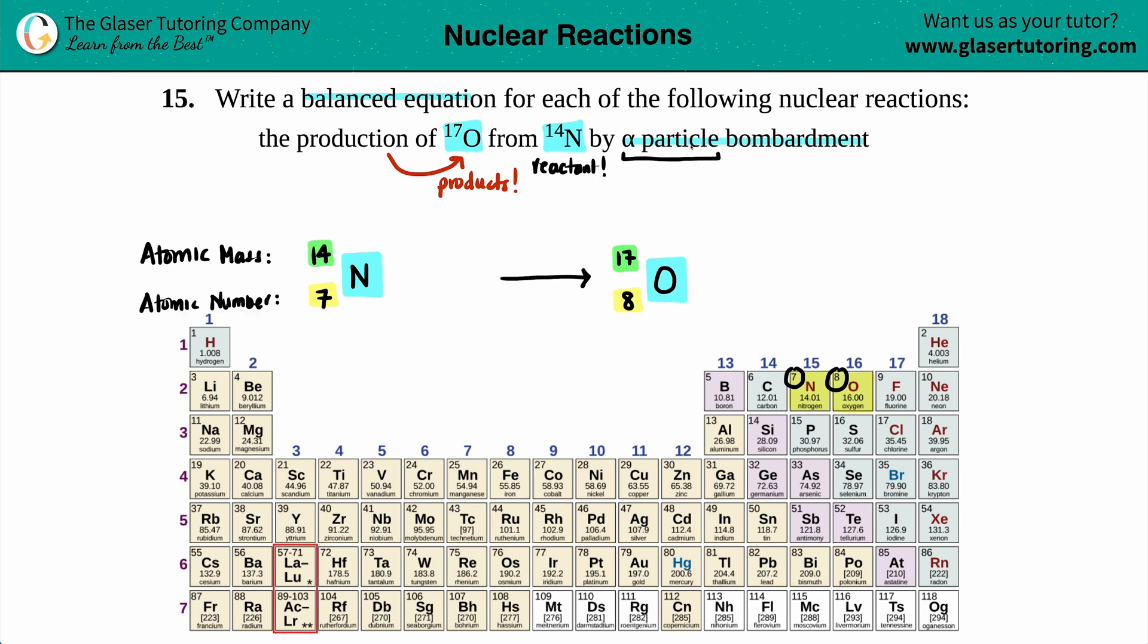Now we have to do the particles. They're saying this is alpha particle bombardment. If you're getting bombarded with information, that means you're adding too much stuff. A bombardment always means you're adding to the start. Anytime they say bombardment, you know that whatever particle they're talking about has to be on the starting line, which is the reactants.